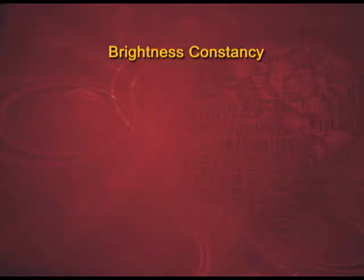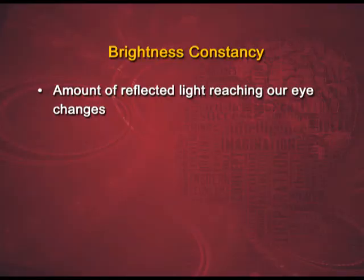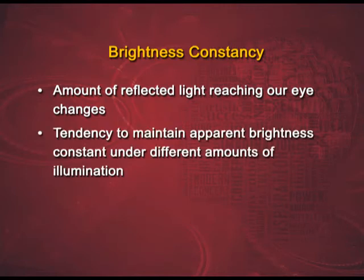Brightness constancy: have you noticed that a color appears to be the same whether you look at it in sunlight or even in dim room light? The sunlight gives a lot of light reflected upon your retina, but as you go into darker areas the light reflected on your retina gets lesser. Still the color remains the same — black remains black, white remains white and blue remains blue. This is possible because of brightness constancy. The amount of reflected light reaching our eye changes, yet the tendency to maintain apparent brightness constant at different amounts of illumination is what we call brightness constancy. Even with changing levels of illumination, the colors perceived are similar — with little differences in shades, your brain will still tell you the correct hue.